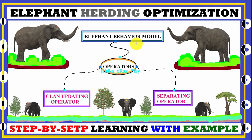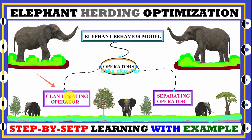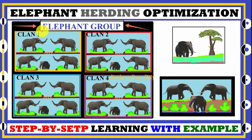Elephant behavior is modeled in this algorithm using two operators: the clan updating operator and the separating operator. The clan updating operator models group behavior, and the separating operator models male elephant isolation. As we know, elephants live in groups in real life — inside the elephant group we have multiple clans.